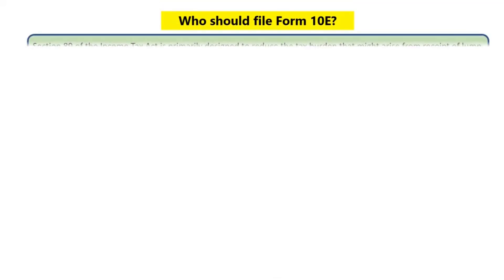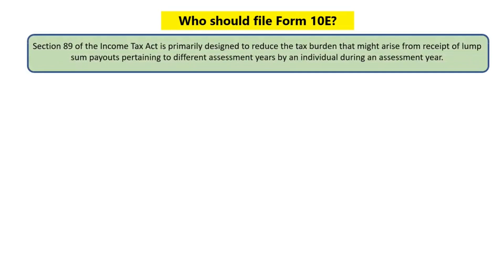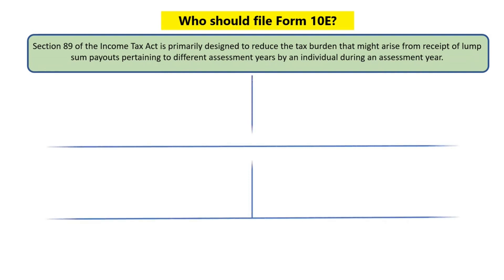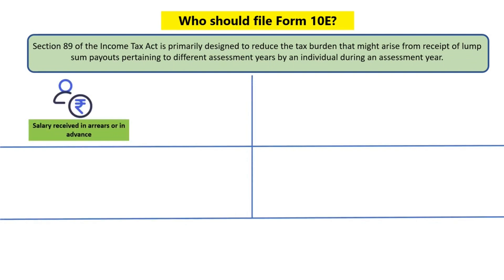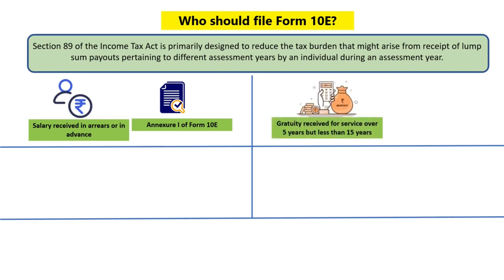Let us now see who should file Form 10E. Section 89 of the Income Tax Act is primarily designed to reduce the tax burden that might arise from receipt of lump sum payouts pertaining to different assessment years by an individual during an assessment year. Some examples of these lump sum payouts could be salary received in arrears or in advance. In such a case, in order to claim tax relief under Section 89, the assessee is required to file Annexure 1 of Form 10E.